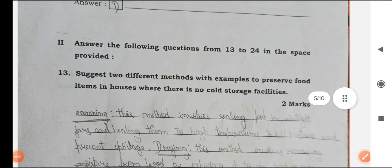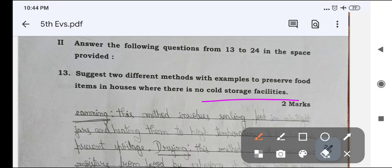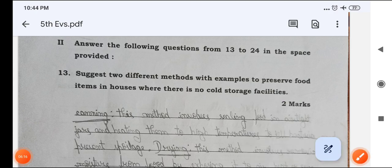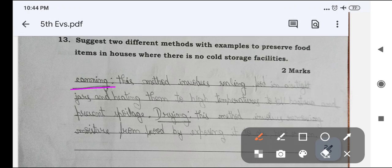Answer the following questions from 13 to 24 in the space provided. Suggest two different methods with examples to preserve food items in houses where there is no cold storage facilities. It means no fridge, no refrigerator. First one is canning process and drying. These are the two different methods to preserve food items in house where there is no cold storage or refrigerator facilities.